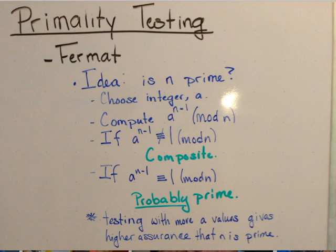The idea is to find out if a certain number n is prime. In order to do this we choose an integer a, usually just a low number, and we compute a to the power n minus 1 mod n.